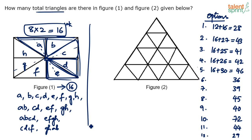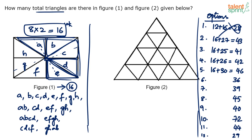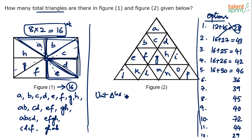Now for the second figure — clearly it will have more than 16 triangles, so we can eliminate the option of 28 straight away. Instead of mapping all triangles randomly, let's number each unit: A, B, C, D, E, F, G, H, I, J, K, L, M, N, O, and P. The number of unit triangles A to P is 16 — using 1+3+5+7 = 16.